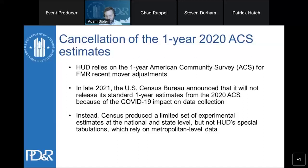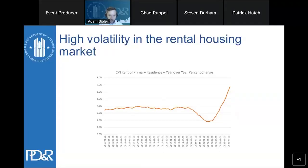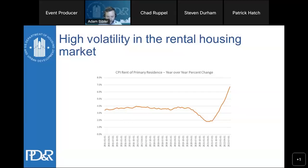The other challenge was volatility in the rental housing market. Looking at the CPI rent of primary residence year-over-year change, from 2005 through 2019 the national average change in rent was just under 4% per year. But starting in 2020, there was a rapid decline and then an even sharper recovery, with 6% to 7% year-over-year change in CPI rents of primary residence — the highest since the early 1980s.